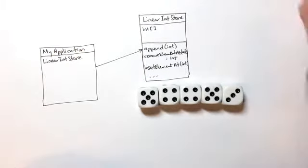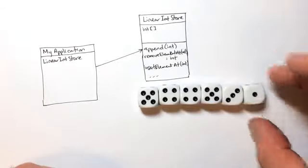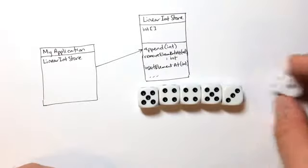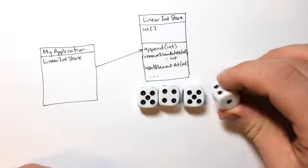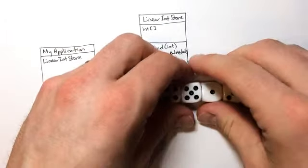For example, you want to be able to append a new value to the end of the list, or you want to be able to remove a value from the middle, or you want to be able to insert a value somewhere along the way. You want to be able to do that with a single command.